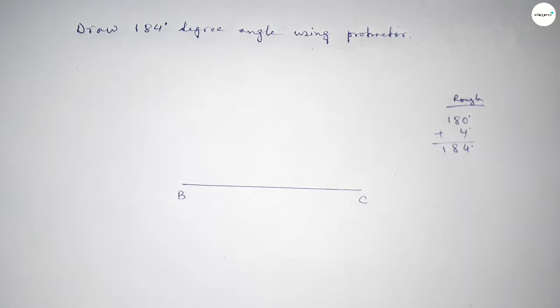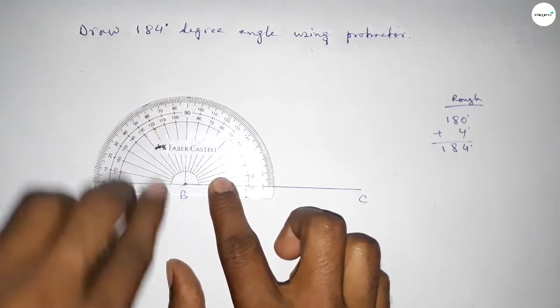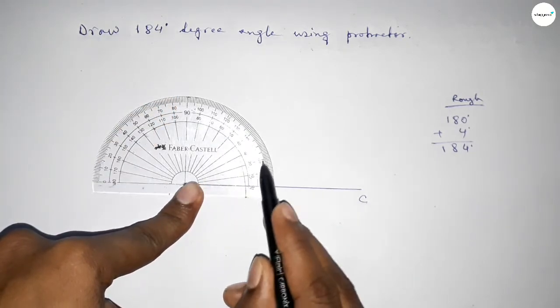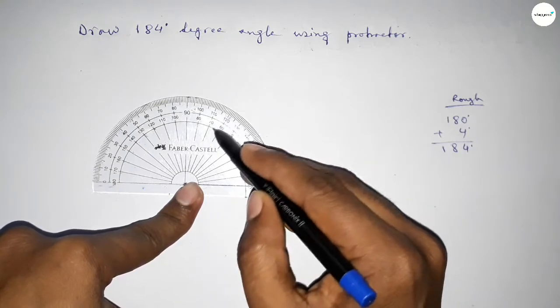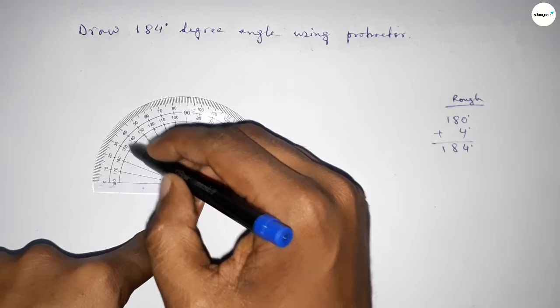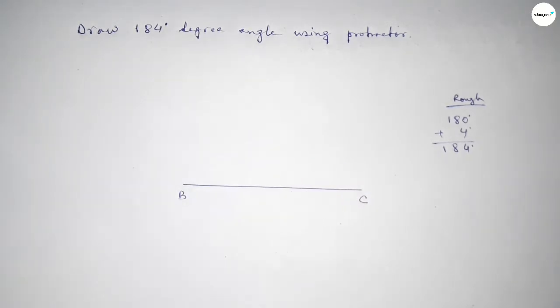First, we have to count the 180-degree angle. Putting the protractor on point B perfectly, then counting the angles: 0, 10, 20, 30, 40, 50, 60, 70, 80, 90, 100, 110, 120, 130, 140, 150, 160, 170, 180. So this is 180 degrees.